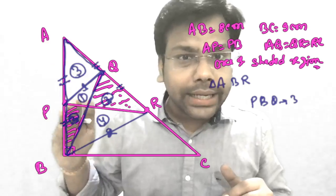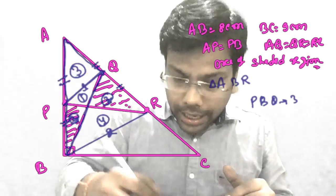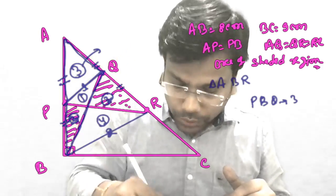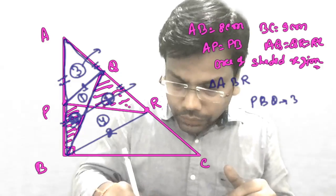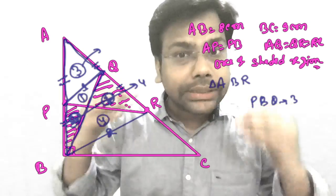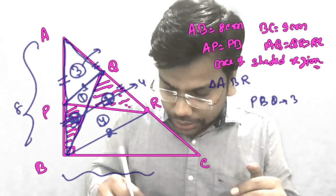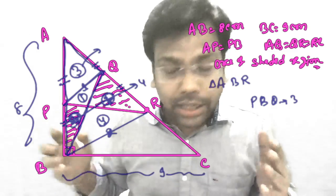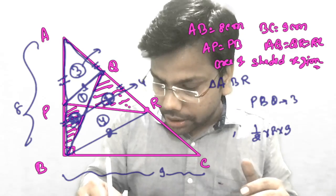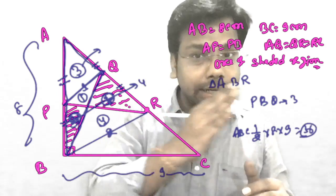So we got the area ratio as 1, 2, 2, 4, and 3. Now I will use the side lengths. The complete length AB is 8 and BC is 9. So the area of triangle ABC is half into 8 into 9, which equals 36. My total area is 36.